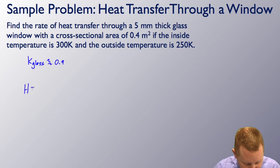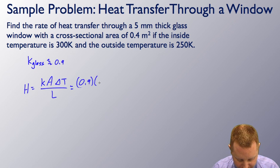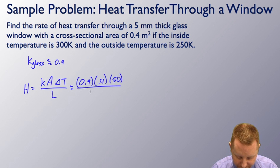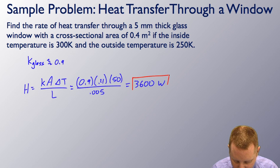So the rate of heat transfer, H, is that thermal conductivity times the cross-sectional area times the temperature gradient, delta T, divided by the length. Or in this case, 0.9 times 0.4 meters squared times our temperature gradient is 50 K, divided by the length, which is going to be 5 millimeters or 0.005 meters, which is going to give us about 3,600 joules per second or 3,600 watts.